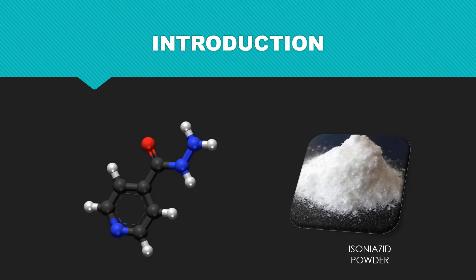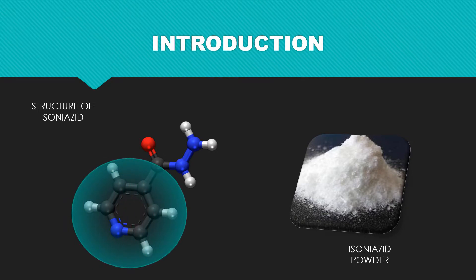The structure of isoniazid derives from nicotinic acid. The base body consists of a heteroaromatic pyridine ring which has low density of electrons because of the nitrogen.